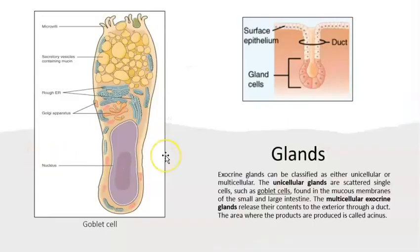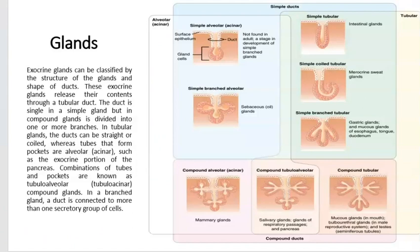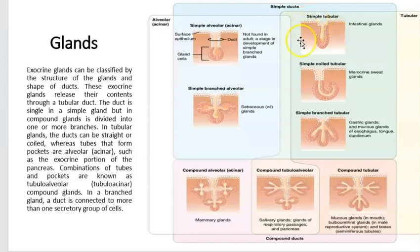Exocrine glands can be classified in multiple different ways: unicellular — just made of one cell — or multicellular, made of multiple cells. An example of unicellular is goblet cells. You can also classify them by the type of tube and the type of acinus. If the acinus is tubular and there is just one duct, it's going to be called simple. That's why this is called simple tubular.